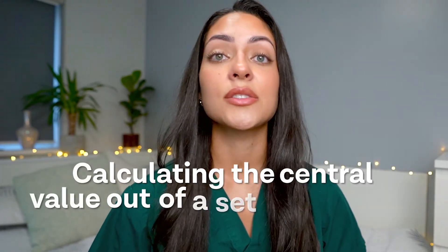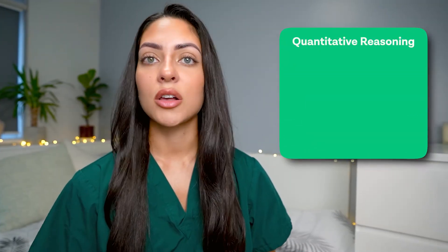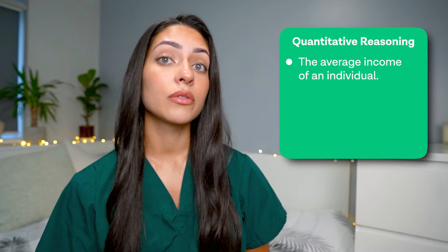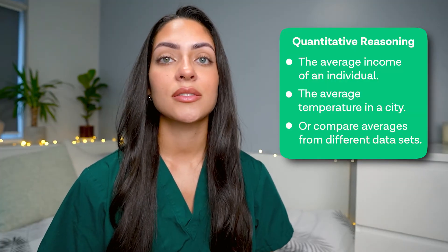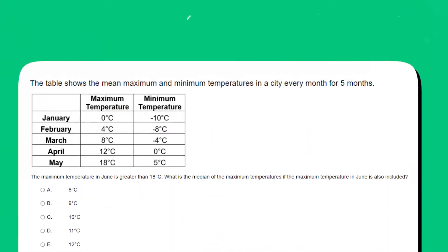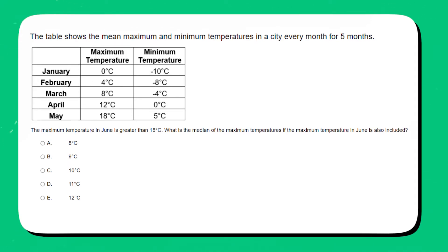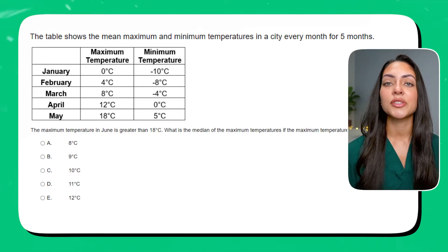Now moving on to averages. This involves calculating the central value out of a set of numbers. Quantitative reasoning questions may ask you to calculate the average income of an individual, the average temperature in a city, or compare averages from different data sets. Let's have a look at another example. The table shows the mean, maximum and minimum temperatures in a city every month for five months. The maximum temperature in June is greater than 18 degrees. What is the median of the maximum temperatures if the maximum temperature in June is also included? Is it A: 8 degrees, B: 9 degrees, C: 10 degrees, D: 11 degrees, or E: 12 degrees? Again, you can pause the video here and try to answer the question yourself.